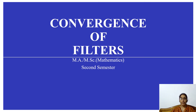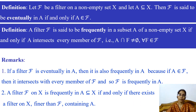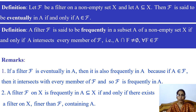Today's topic is convergence of filters. We start with two definitions. Definition one: let F be a filter on a non-empty set X and let A be a subset of X. Then F is said to be eventually in A if and only if A belongs to F. That is, if any subset A of X belongs to filter F, then we say that filter is eventually in set A.